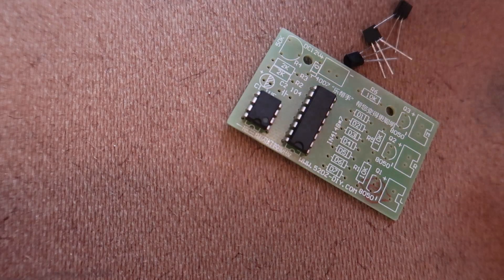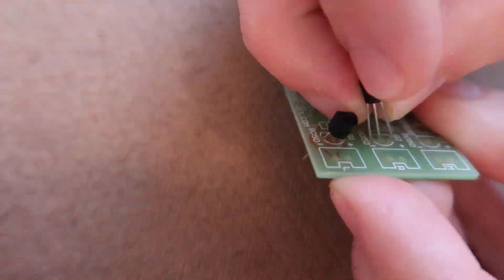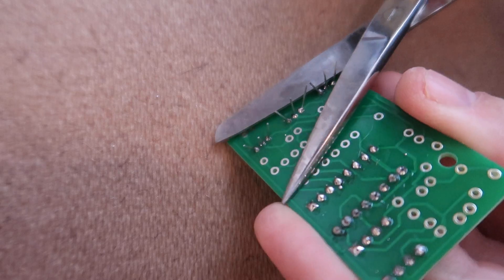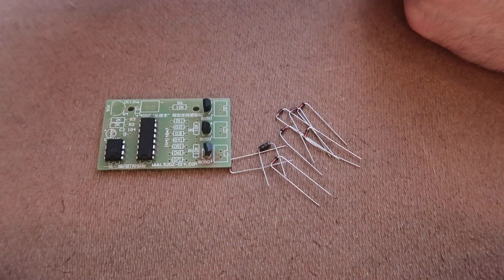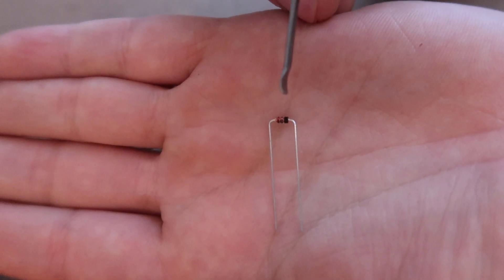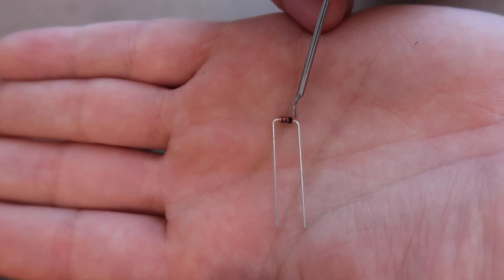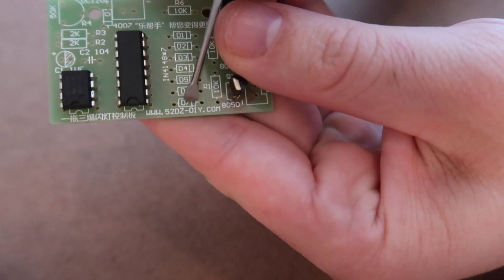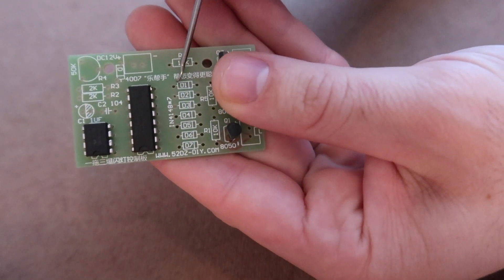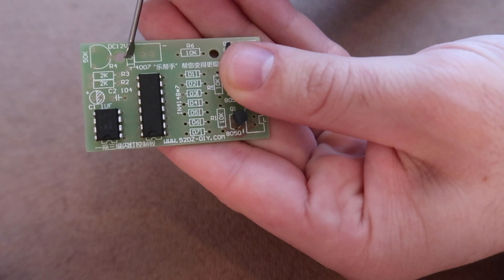The three transistors go over here. Next, the diodes. It's important to pay attention to which side this mark is on and correlate it with the mark on the board. The 4148s go over here and the 4007 here.